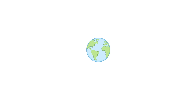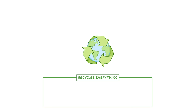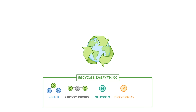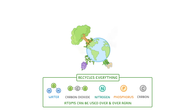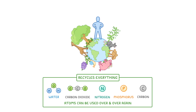Life on Earth has existed for billions of years, and this has been possible because it recycles everything, from molecules like water and carbon dioxide, to individual atoms like nitrogen, phosphorus, and carbon. Because of all this recycling, atoms can be used over and over again to make loads of different organisms over millions and millions of years.